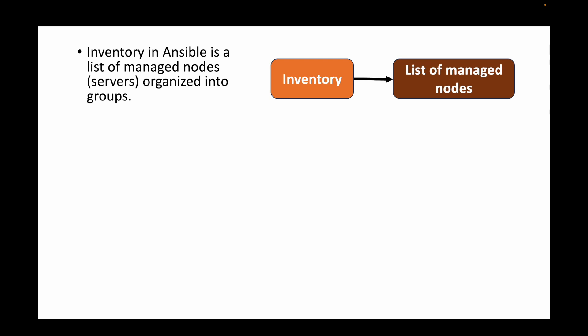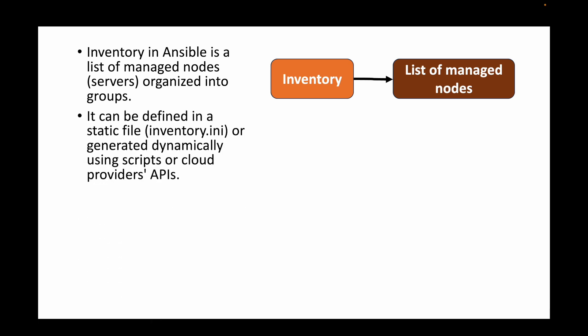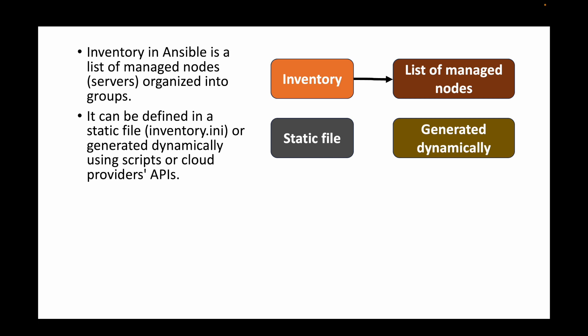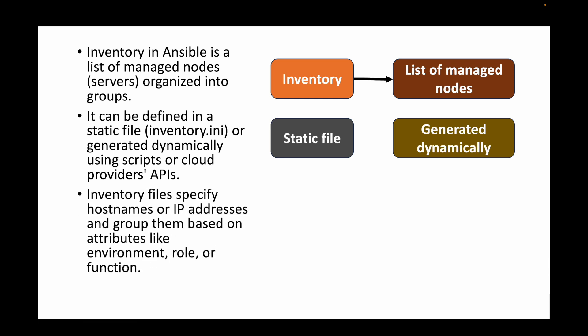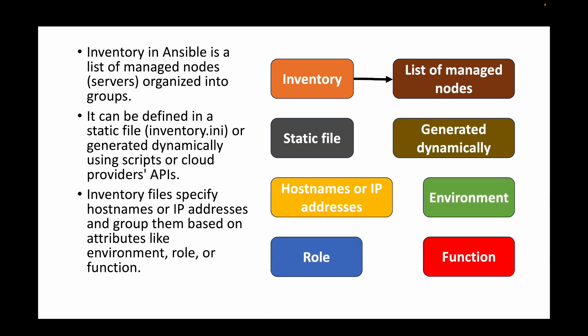The next question is: how do you define inventory in Ansible? Ansible manages remote machines, but we need to provide information about those machines — this is where inventory comes in. Inventory is a list of managed nodes or servers that can be organized into groups. It is defined in a static file, generally an inventory.ini file, or generated dynamically using scripts or cloud provider APIs. The inventory file specifies hostnames or IP addresses and groups them by attributes like environment, role, and function.